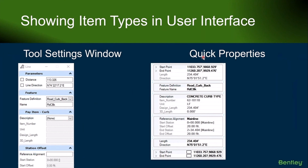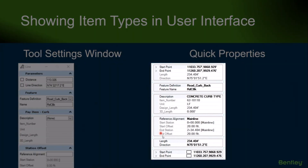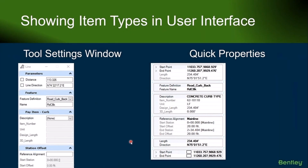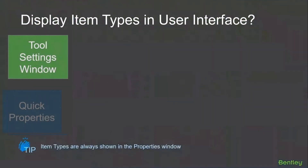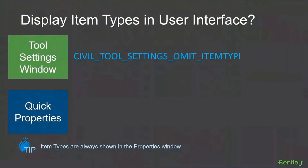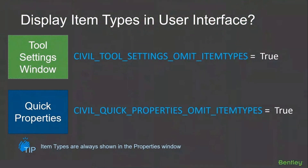Same thing if you bring up the quick properties window — you may or may not want to see these item types in there. So we have given you that ability now to have the item types not shown on those tool settings and quick property windows. That is done with these two configuration variables. There are two separate variables depending on which one you want to control, so you can turn off or omit item types in those dialogues if you want.